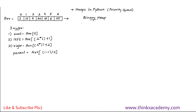Now let's use these three rules to construct the binary heap. The root is 2, at position 0. For the left child, 2*0 + 1 = 1, so position 1 holds element 15. For the right child, 2*0 + 2 = 2, so position 2 holds element 4.